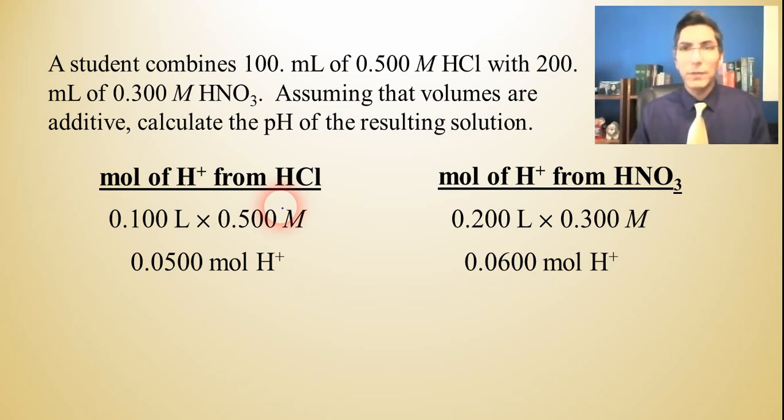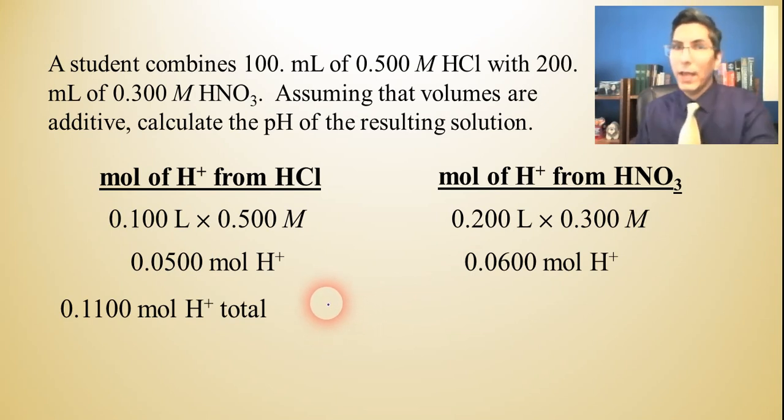What's the total number of moles of H+? Well, just add them together. 0.05 plus 0.06 is 0.11. So we have a total of 0.11 moles of H+. Now we have to divide that by the total volume. What's our total volume?